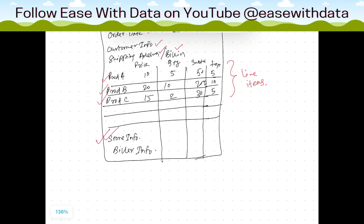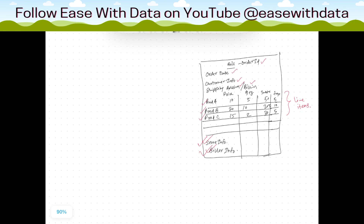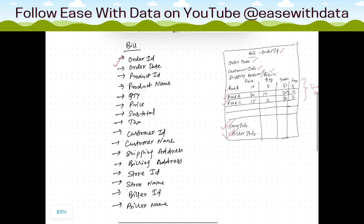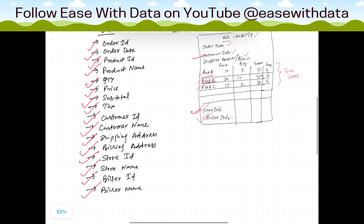Other than the product line items, we also have store information — the store ID which is selling the products along with the store name — and biller info, the person who is doing the billing. So the complete information we get from a bill is: order ID, order date, product ID, product name, quantity, price, subtotal, tax, customer ID, customer name, shipping address, billing address, store ID, store name, biller ID, and biller name.